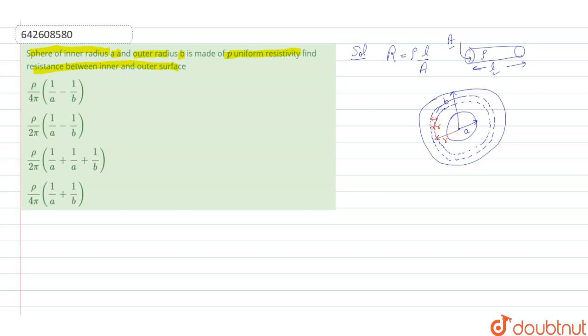We integrate the term for R equals to 0 to R radius rho into dr upon A. A is 4 pi R square.